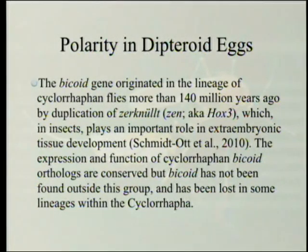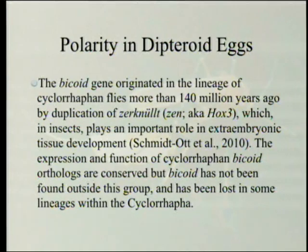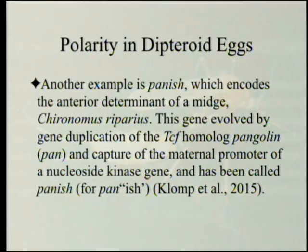The bicoid gene originated in the lineage of cyclorraphine flies more than 140 million years ago by duplication of Zerknüllt (ZEN), sometimes known as HOX3. We have flies from 140 million years ago that we've sequenced. Bicoid plays an important role in extra-amnionic tissue development. Bicoid has not been found outside this group and has been lost in some lineages within Cyclorrhapha — so bicoid is unique to fruit flies and their kin.